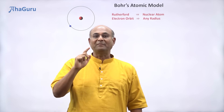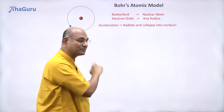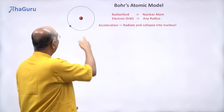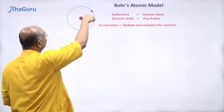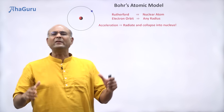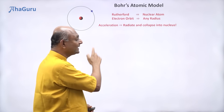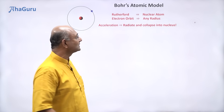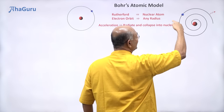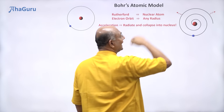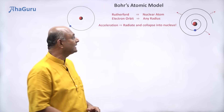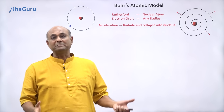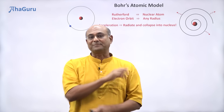A charged particle with an acceleration, according to Maxwell's theory, must radiate. So that means, as the electron orbits like this, it is going to continuously radiate. And as it radiates out energy, it will lose energy and collapse into the nucleus. Basically, as the electron moves around like this and radiates, it is going to spiral into the nucleus, which then means that atoms must quickly collapse.